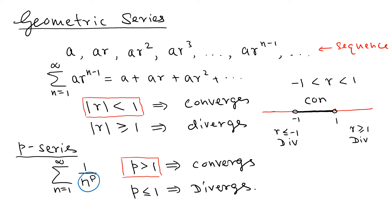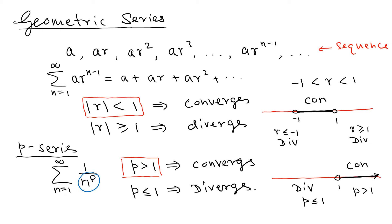On the number line for the p-series, convergence happens when p is greater than 1 — so from 1 upward. Everything below 1, where p ≤ 1, diverges. To summarize: the geometric series converges when |r| < 1, and the p-series converges when p > 1. The main reason is that in the geometric series r is in the numerator, while in the p-series the n^p term is in the denominator — that is the major difference.